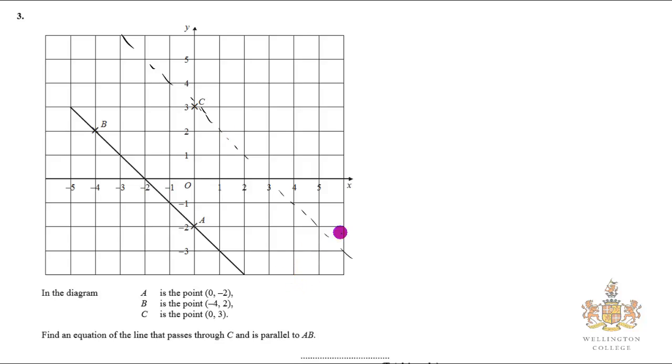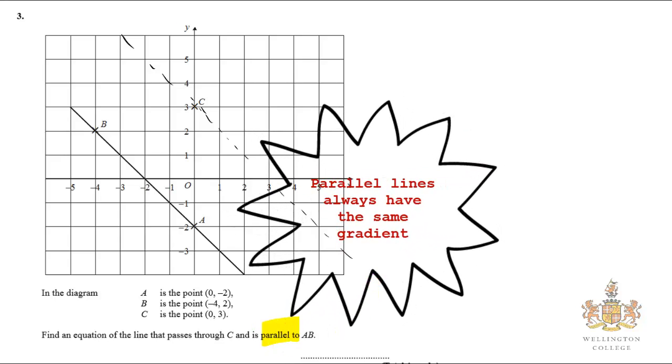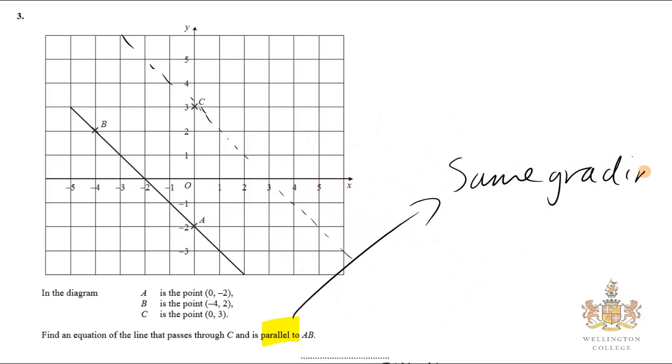What do we know about parallel lines? Well, they have the same gradient. Identify the word parallel - it means the same gradient.